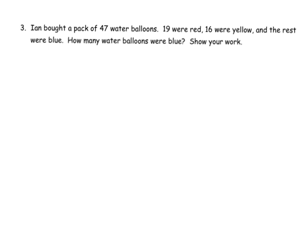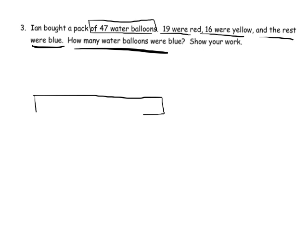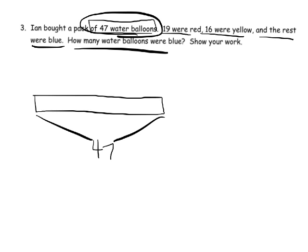Let's model this problem. Ian bought a pack of 47 water balloons. 19 were red, 16 were yellow, and the rest were blue. How many water balloons were blue? I'm going to model this with a single tape diagram. When it says he bought 47 water balloons, that's the total. Then it says 19 were red, so I'm going to put that arbitrarily right there and call that 19, and I'll even label that red. Then 16 were yellow, so I'm going to put that there and call that 16 and yellow. Then it says the rest were blue, so that's this part right here.